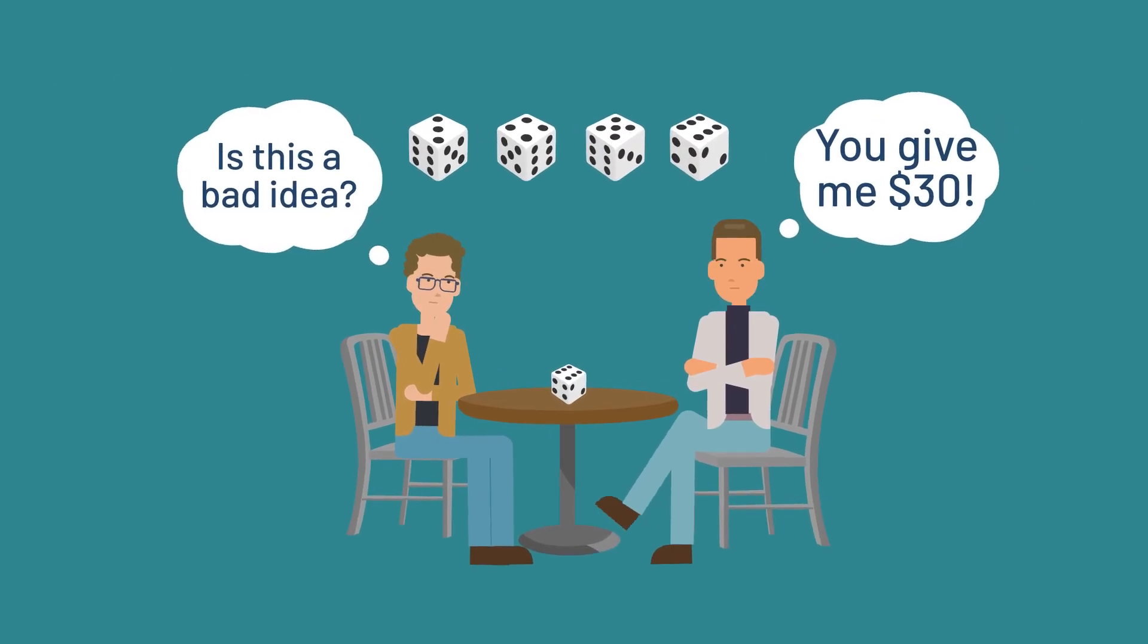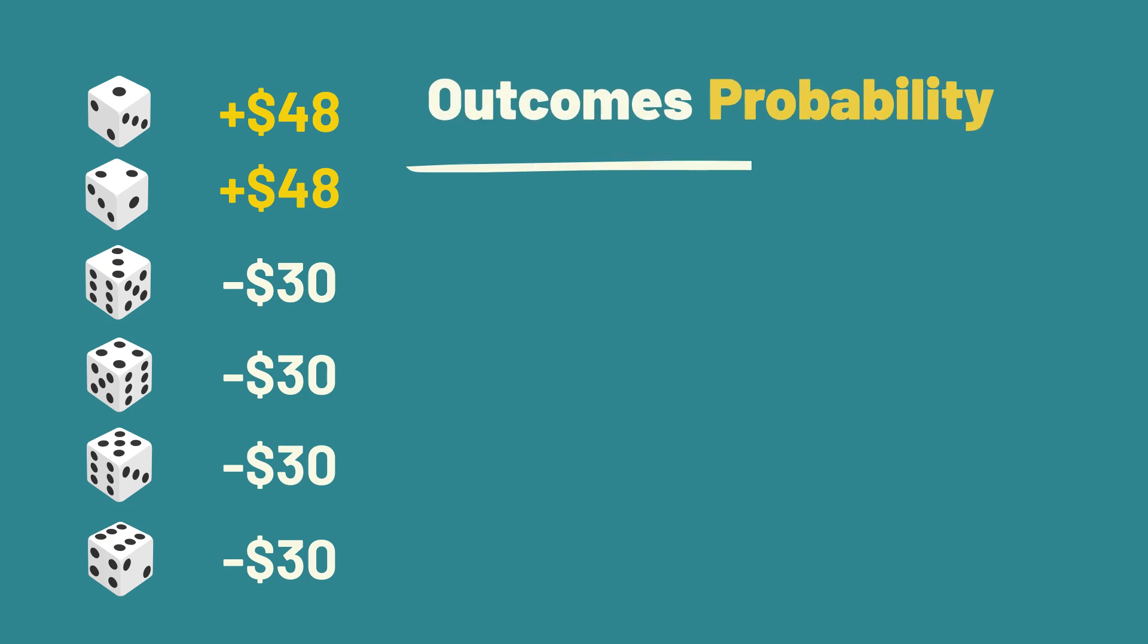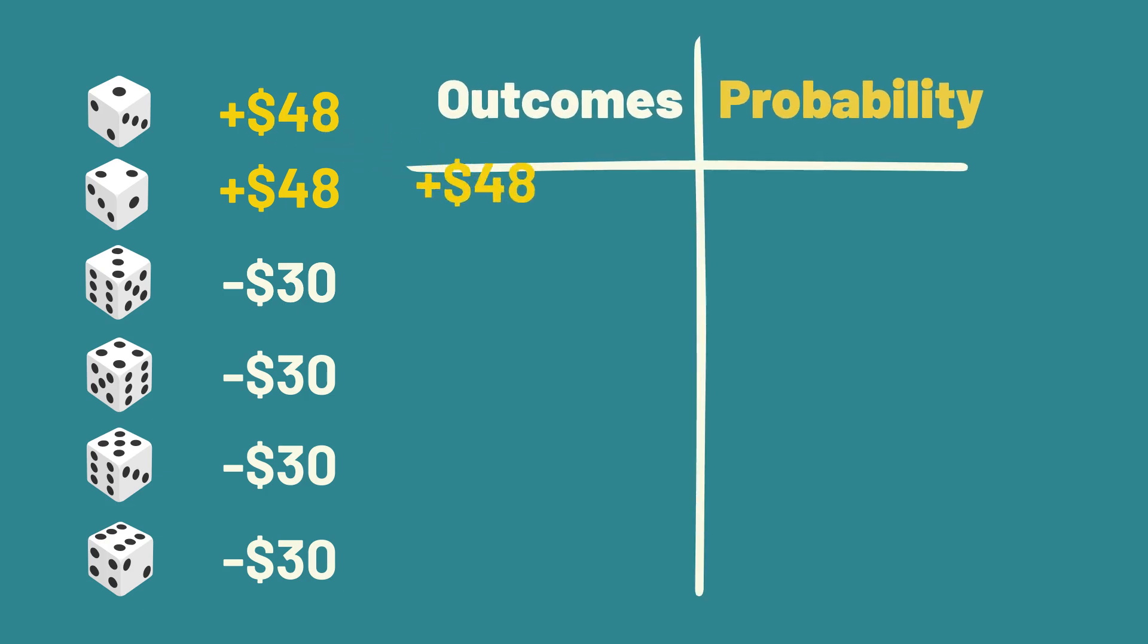Now, let's look at our original example, the game where we roll a die. If we get 1 or 2, we get $48, and if we roll a 3, 4, 5, or 6, we lose $30. The two outcomes are $48 and negative $30.